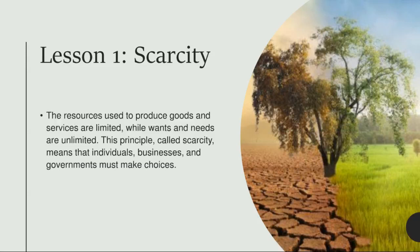Land includes natural resources like coal, water, and forests. Labor is work for which people receive pay. Capital is a human-made resource used to produce other goods and services. Objects made by people like buildings and tools are called physical capital — they are tangible items. Human capital refers to the knowledge and skills people gain from study and experience.